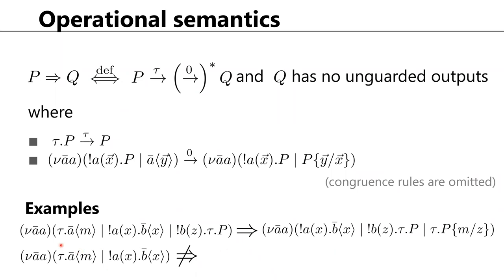As an example, this process can reduce to another process in one step: after taking this tau action, the output a-bar communicates with this input, then this message communicates with this input, and after that all outputs are guarded. However, this other process cannot reduce because even if we take off the tau action, b-bar cannot communicate with any other input, leaving an unguarded output remaining.